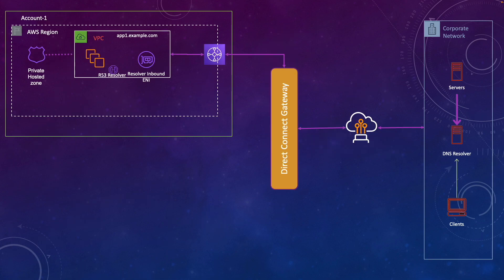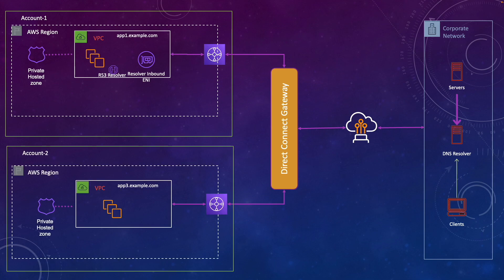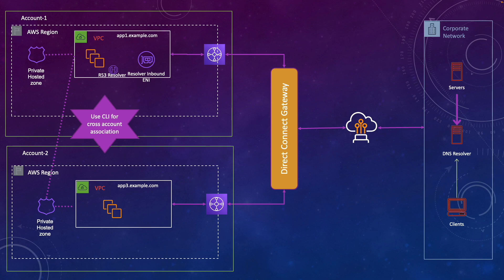Next, let's talk about multi-account. We've covered multi-region within the same account, but what if you have multiple accounts? If you have an inbound endpoint ENI created in one account and your application is in a same or different region in a second account, the solution is similar. You associate your private hosted zone with the same VPC where your resolver endpoint exists. The key difference for cross-account is that you cannot associate the private hosted zone using the console — you have to use the CLI. After that, you can resolve application DNS from on-prem across any account and any region.